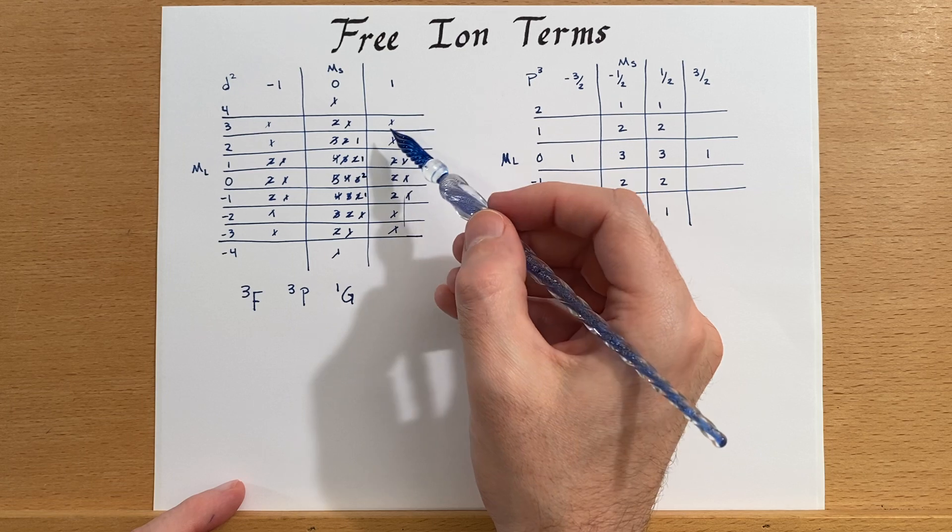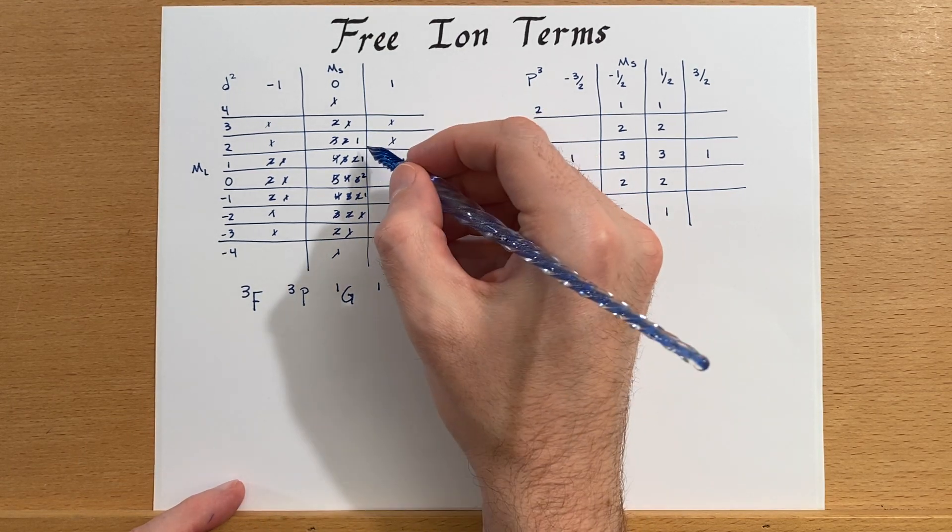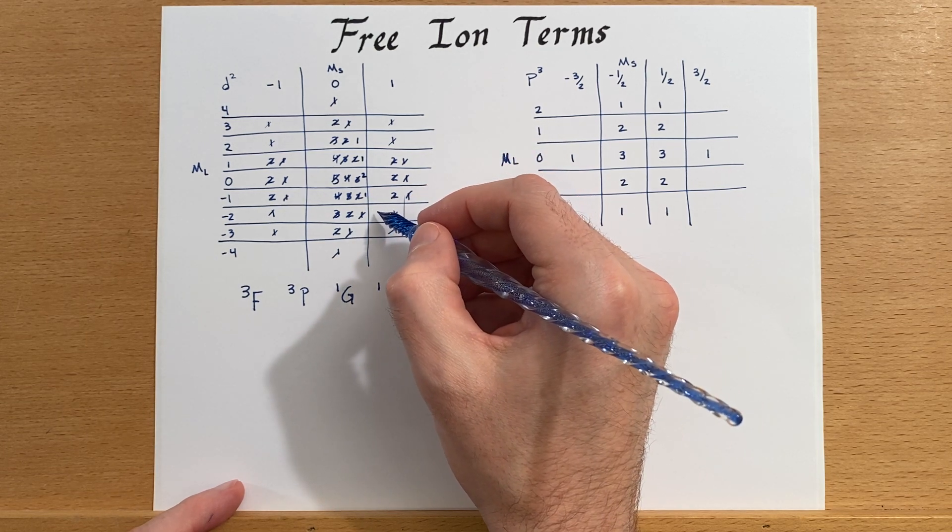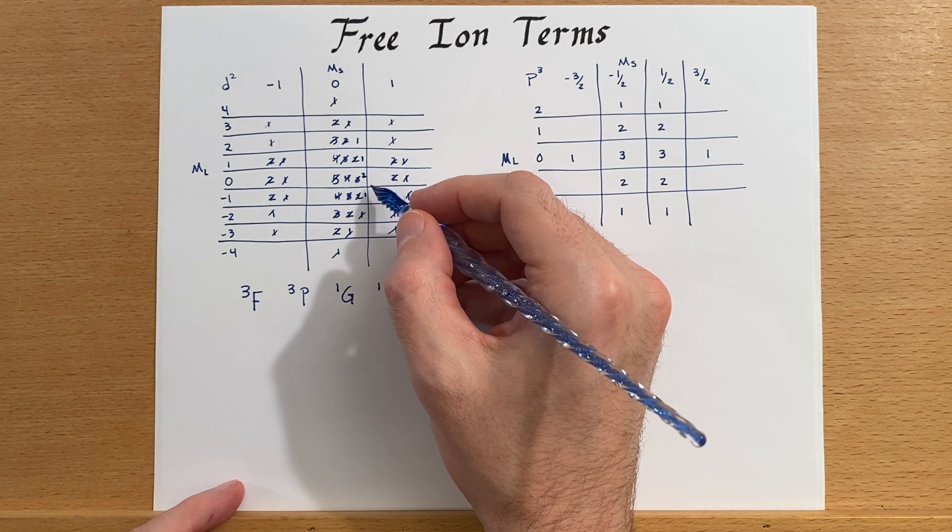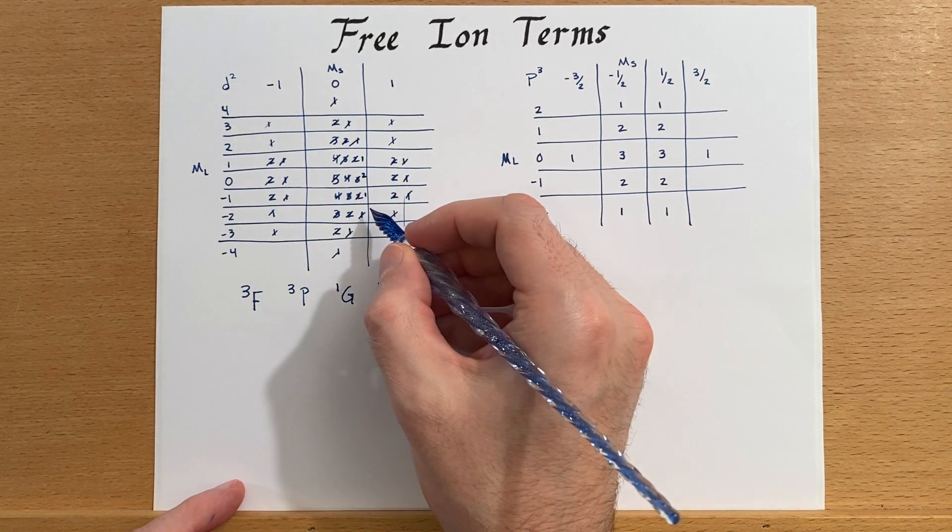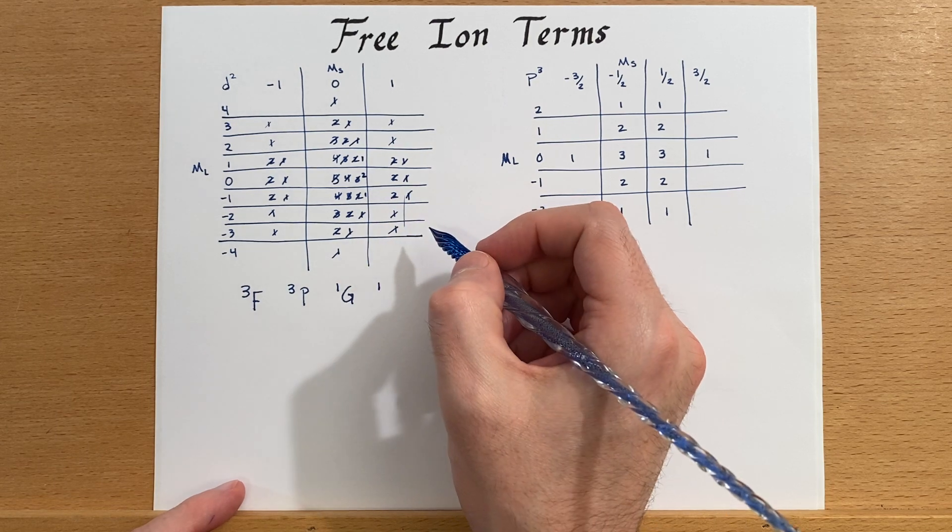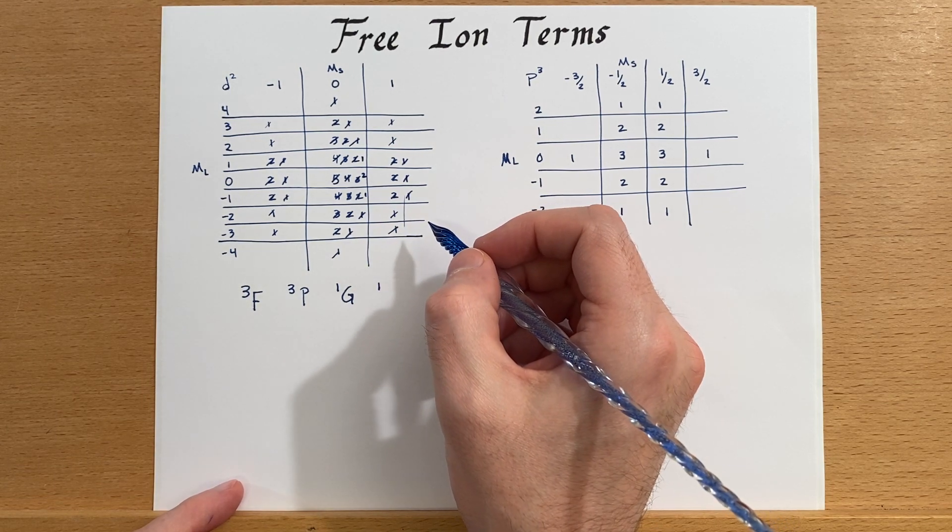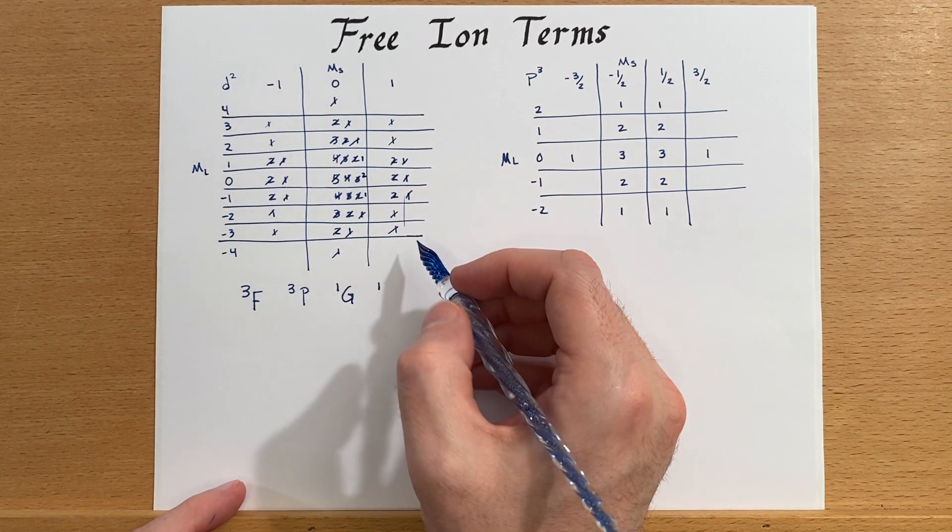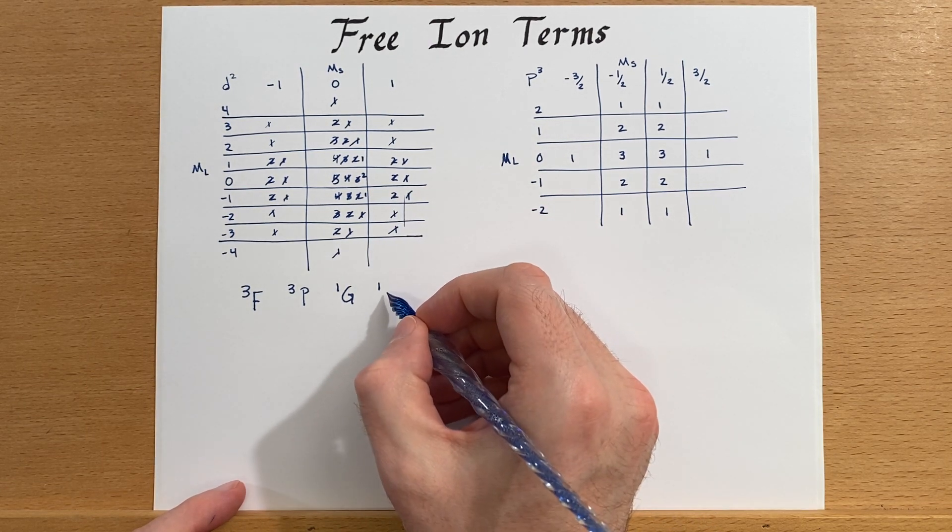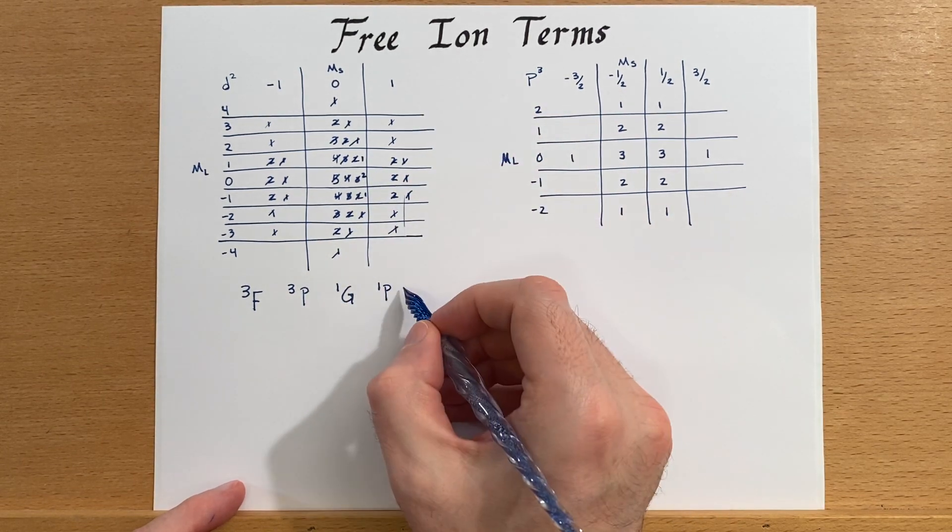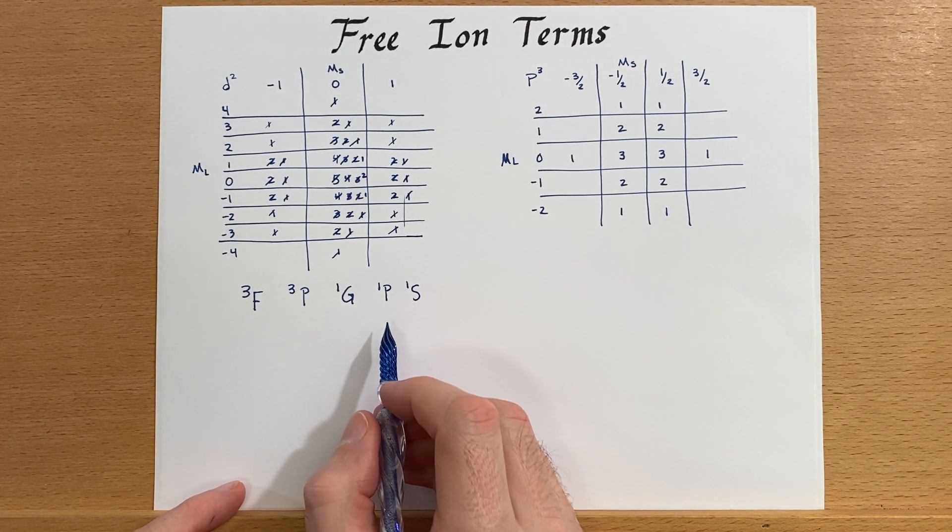So now we have another singlet, which is one, two, three, four. No, wait, that one's gone. One, two, three tall. I think, hang on. Yeah. So three tall, singlet P. And then the last one is singlet S.